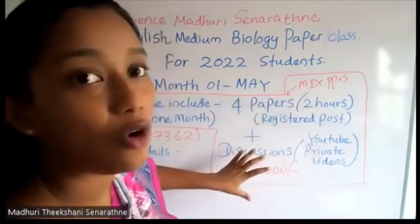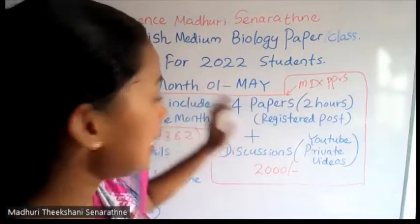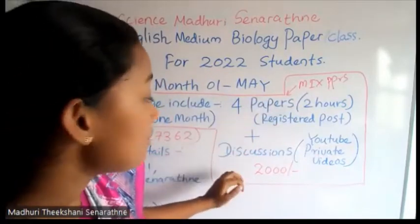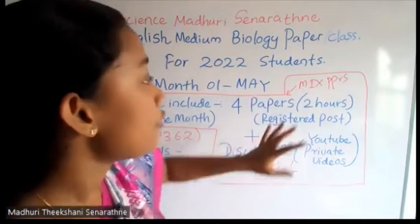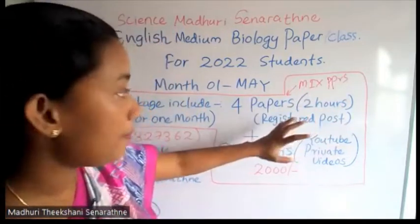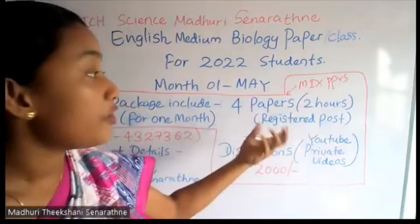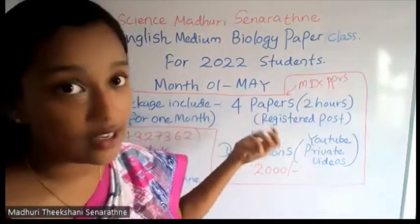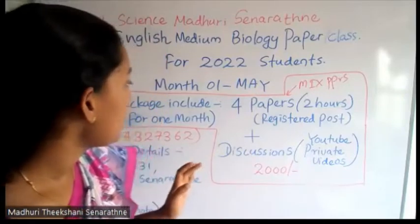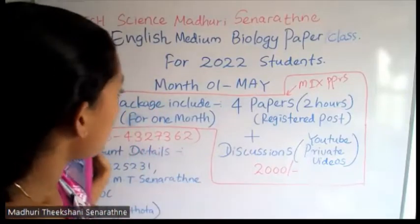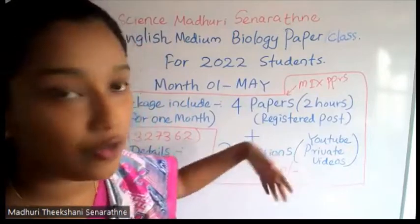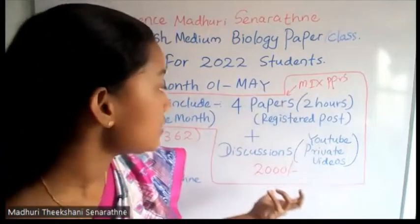I have arranged one paper package per month. In each paper package there are four papers with their discussions. You have to complete each paper within two hours. One two-hour paper may include 50 MCQs, eight structured essay questions, or four essay questions. After doing your paper, you will receive your discussion videos to your email address.